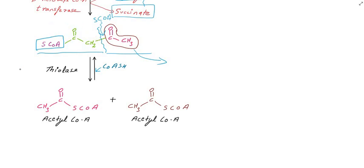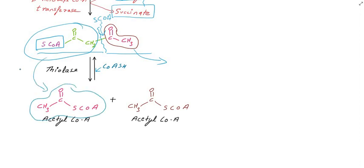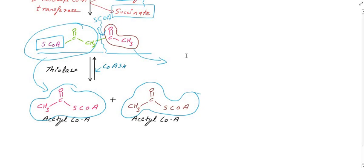One molecule of acetyl-CoA is formed, and with three total molecules of acetyl-CoA added, coenzyme A is involved again. Finally, you get two molecules of acetyl-CoA as the end product of ketolysis. This is the reason ketone bodies are used as an alternate energy source. Thank you for watching.